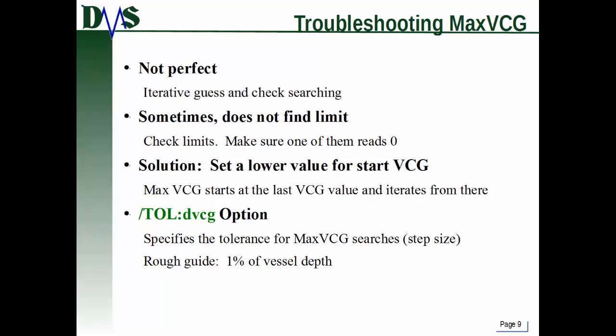The solution is to set a lower starting VCG value. Max VCG starts at the last VCG value and iterates downward from there, so you can set a lower starting point. Another option is to adjust the tolerance using the TOL:DVCG option, where DVCG is the physical step size GHS will use for each successive VCG trial. As a rough guide, I recommend 1% of your vessel depth as a good starting value for the tolerance, though you can adjust it up or down to see what works.